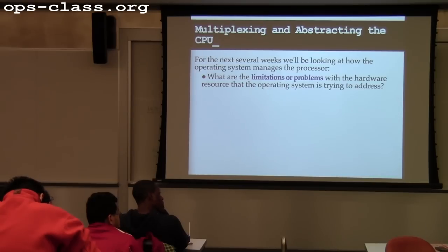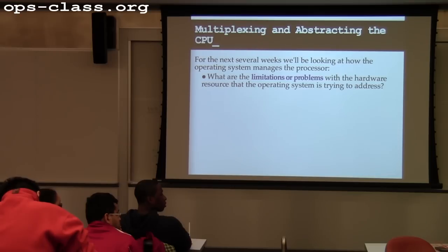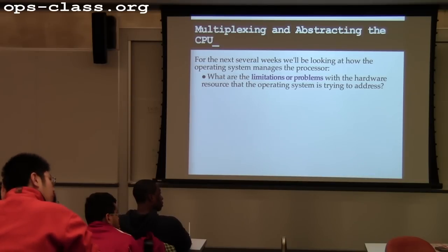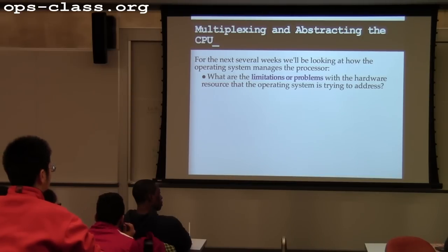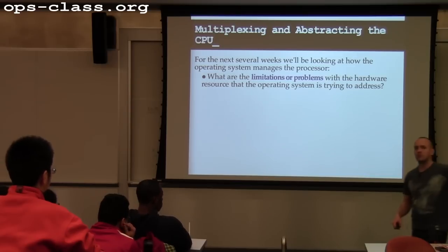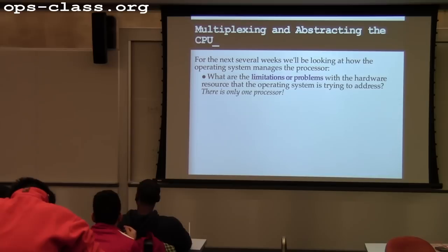Even in a multi-core world, the number of cores is still smaller than the number of applications running. If you do 'ps' and count the number of running processes, there are probably several hundred. Even if you have a 16-way system, it's not enough — there are multiple processes trying to share the same physical resource, the same set of cores.